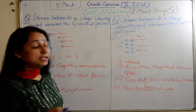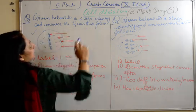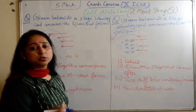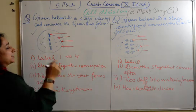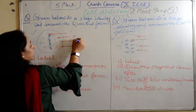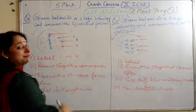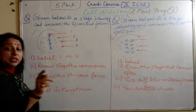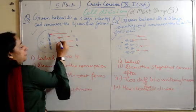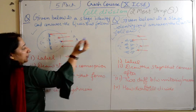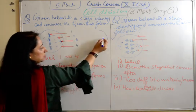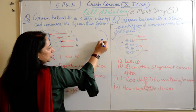Given below is the stage. Identify the question and write the answers to the questions that follow. The first sub-question will always be: label the parts 1, 2, 3, and 4. Now here, some children commit a mistake. We have a labeling here - if I just magnify this for you.